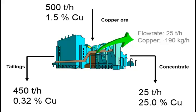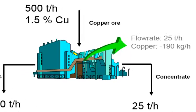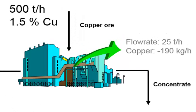An imbalance is observed on the solid mass flowrate and the copper mass flowrate between the input and the sum of the two outputs. A surplus of 25 tons per hour of solids in the feed compared to the outputs is observed. On the contrary, a surplus of 190 kg per hour in the outputs compared to the feed is observed. These discrepancies are arising from sampling and measurement errors.